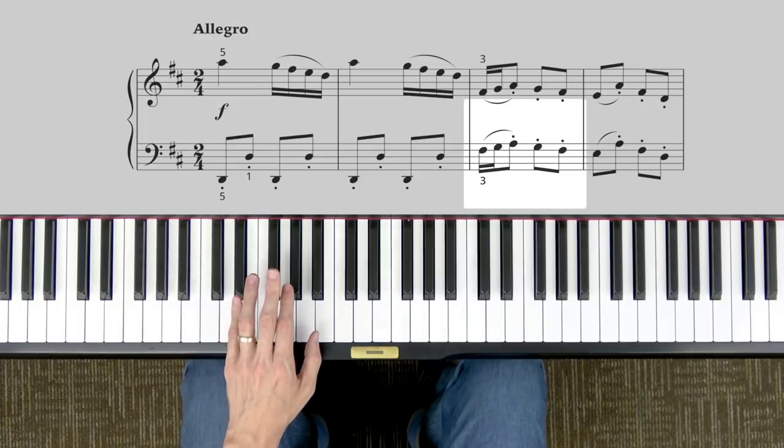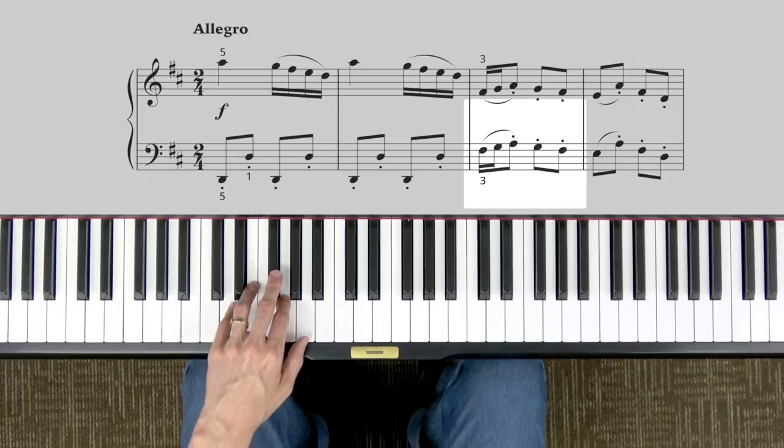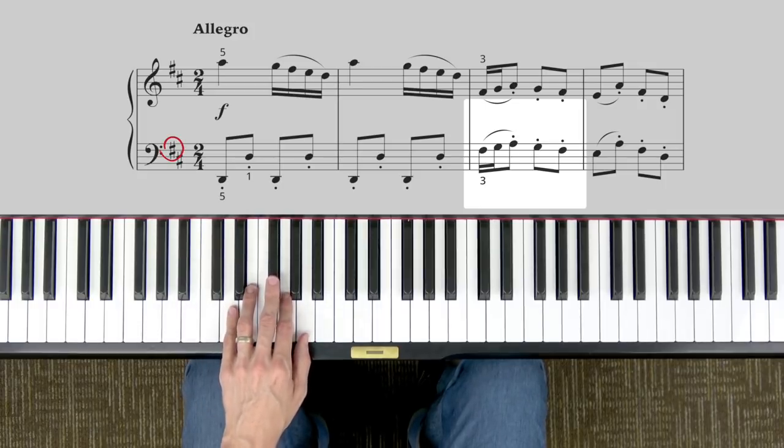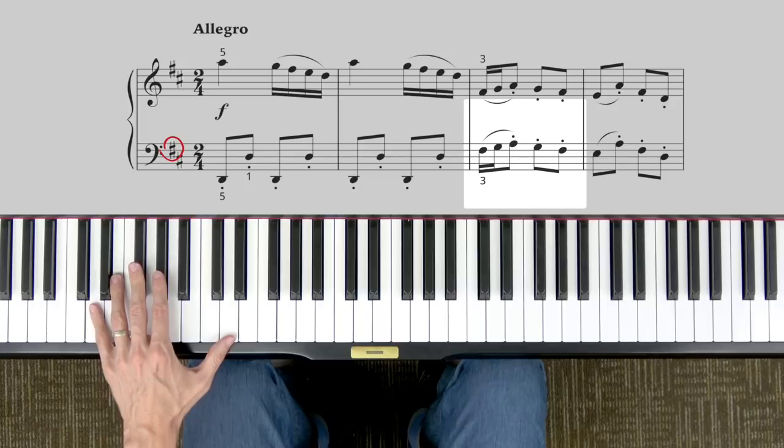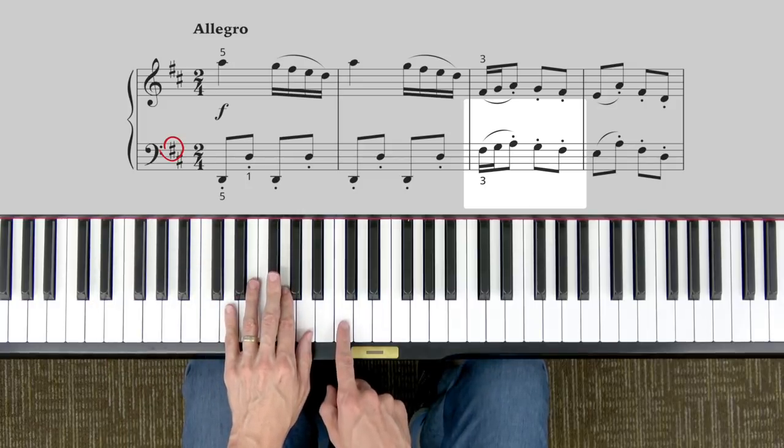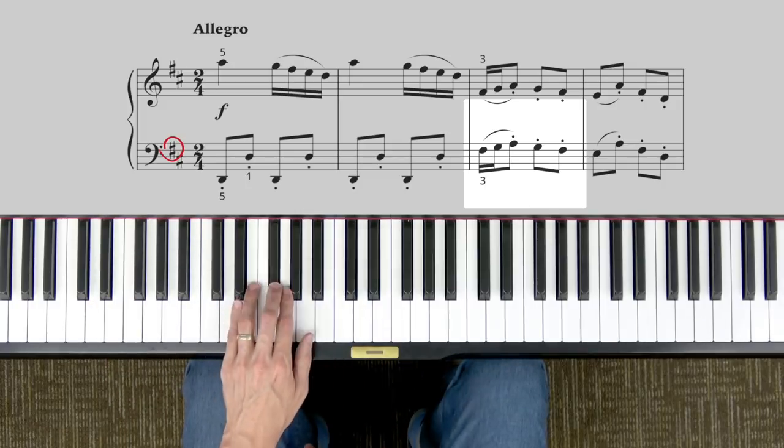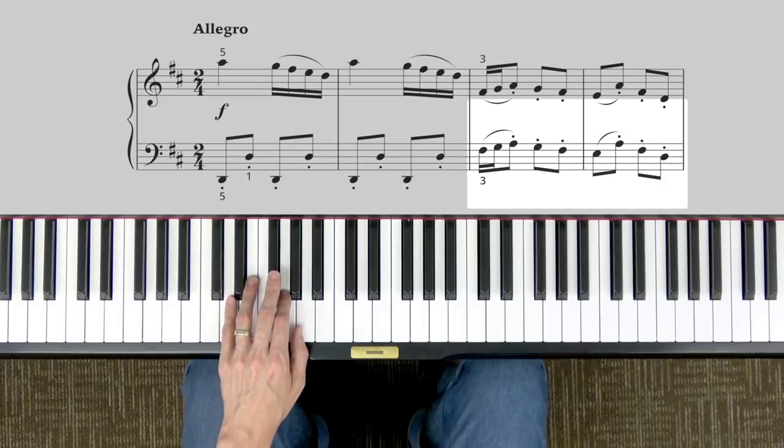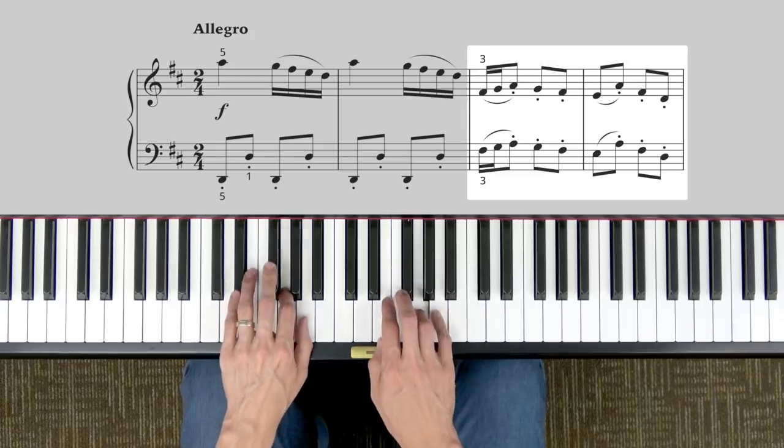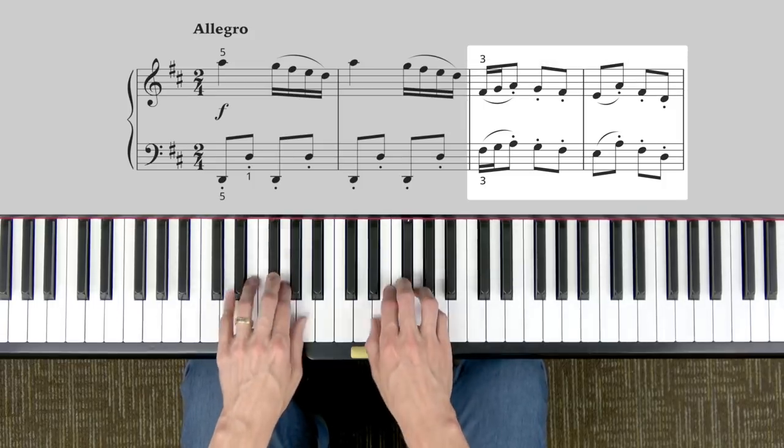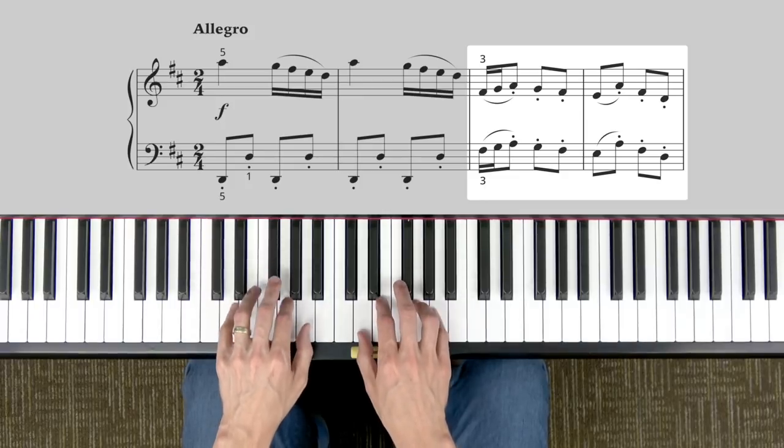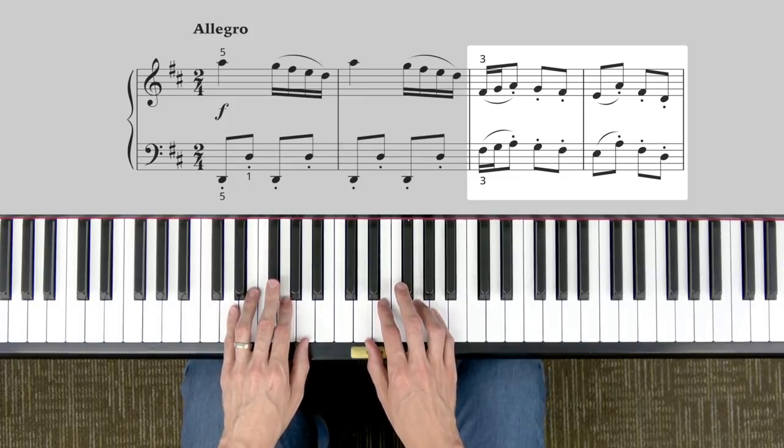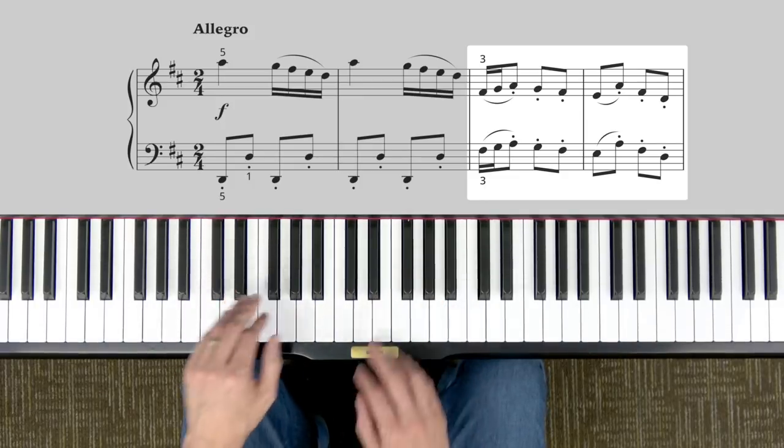What is the first note the left hand plays in measure 3? If you said F, you're correct, which in this piece is F-sharp because of our key signature, and you'll notice it's the F-sharp up here near middle C. What do you notice about these notes that the left hand plays? They're the same notes the right hand plays. Both hands play the same melody one octave apart. Hey, that makes it pretty easy, right?